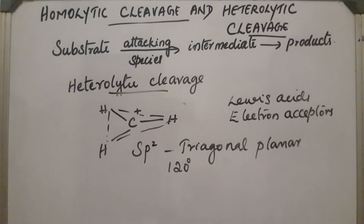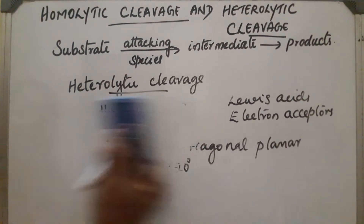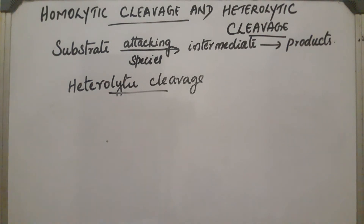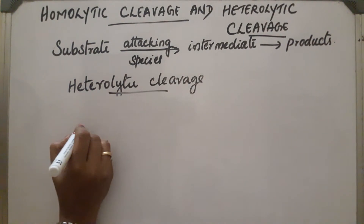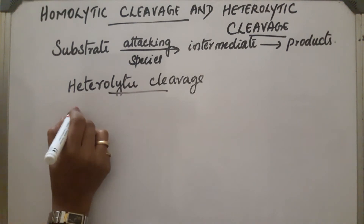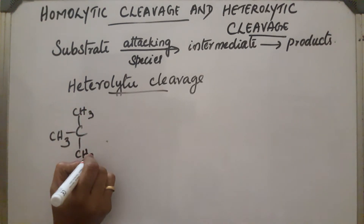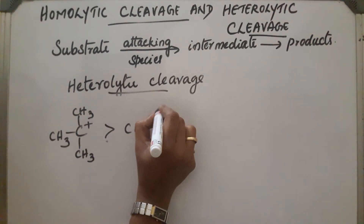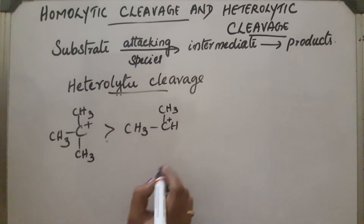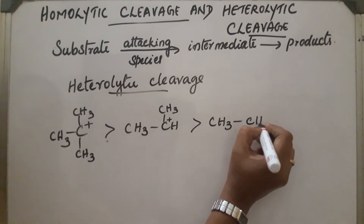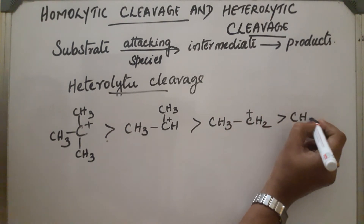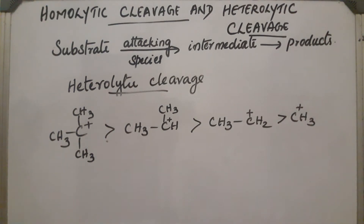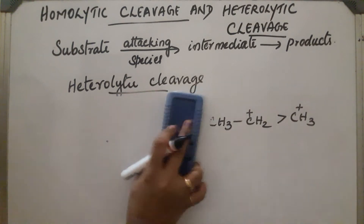The stability order of carbocations is: tertiary carbocation is highly stable, then secondary, then primary, then CH3+. These reactions are also called polar reactions.